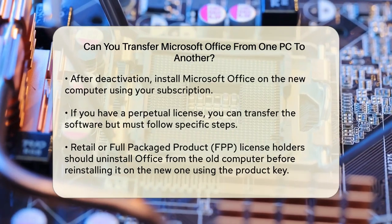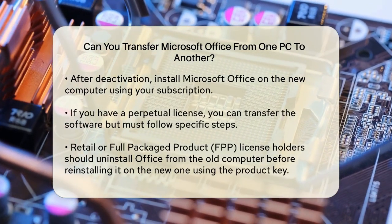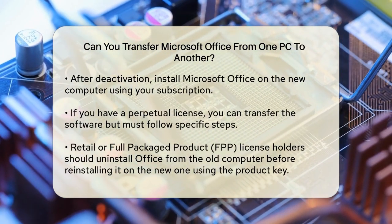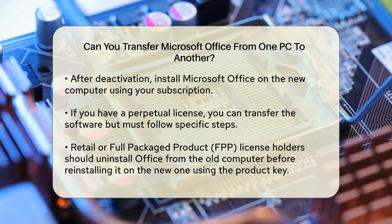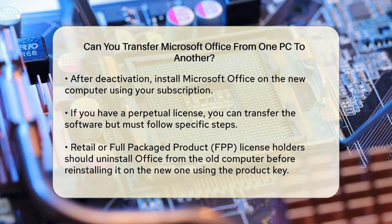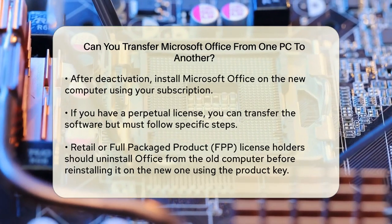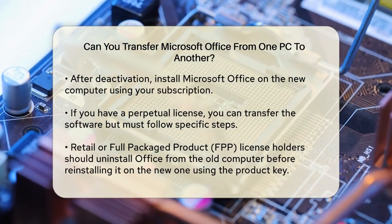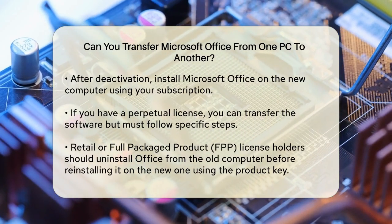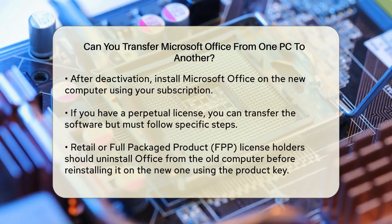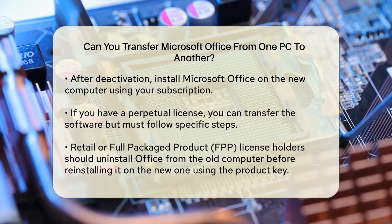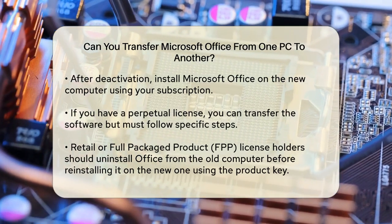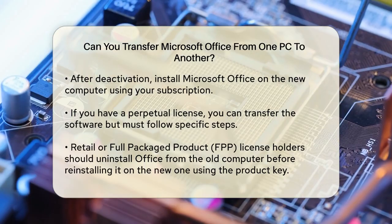If you don't have a Microsoft 365 subscription, you might have a perpetual license, which means you own the software outright. In this case, you can transfer the software, but you need to follow some specific steps. For example, if you have a retail or full-packaged product license, you can uninstall Microsoft Office from your old computer and then install it on your new one using the product key. Make sure to remove the software from the old computer to avoid licensing conflicts.